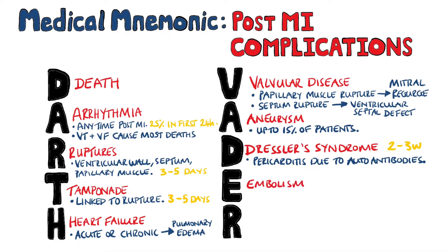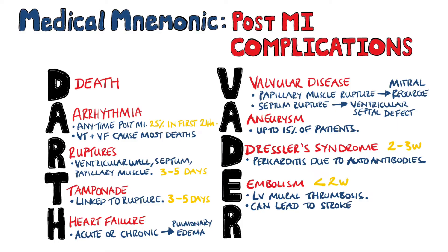Next we have E for embolism. Usually it's a left ventricular mural thrombus, meaning it is on the wall of the left ventricle. This can lead to stroke, and thrombi usually form within the first two weeks post-myocardial infarction.